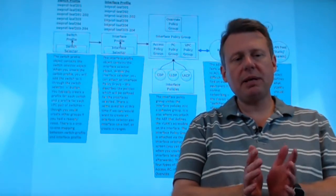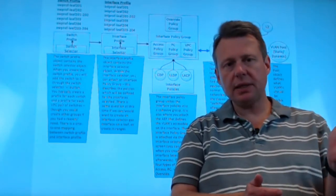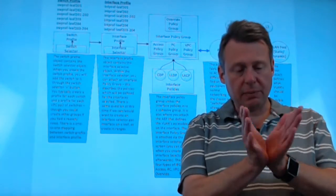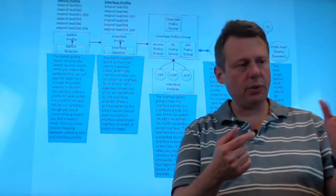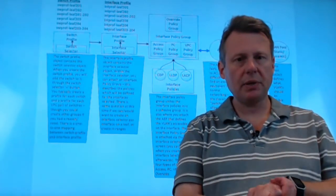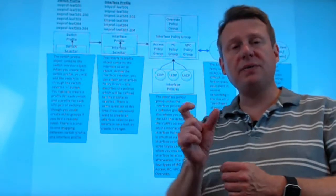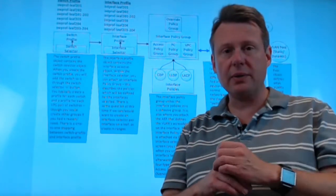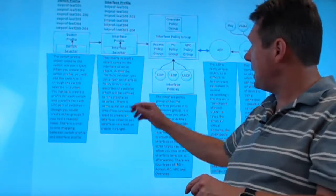The other thing that ACI really likes is symmetry. What do I mean by symmetry? I mean, if I connect the port six on leaf 201, I want to connect the port six on leaf 202, you know, for my VPC, right? And then I'm just putting port six and six into a VPC. Unlike NXOS, you're not going to assign an actual VPC number to anything. ACI takes care of that for you. It's kind of abstracted from you. But the interfaces are not. That's what we're going to get to next.